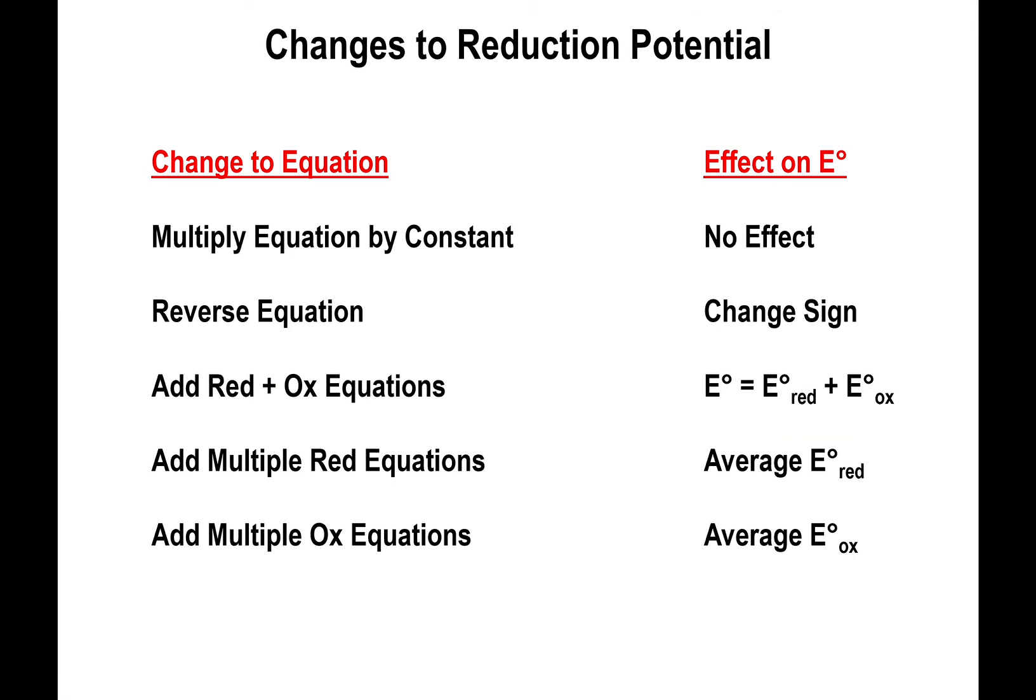And to sum up what we've done right here, if you apply the following changes to the equation, this is how you're going to change the potential itself. If you multiply the equation by constant, you do not do anything to the potential, you keep it as is. If you reverse the equation to come up with an oxidation, then you change the sign of E. If you add reductions and oxidation equations together, then you add the potential of the reduction with the potential of the oxidation to come up with a new potential for the entire reaction. If you have multiple reduction events or consecutive events, then you're going to have to average the reduction potential. And also, if you do have multiple oxidation steps to go from the original species to the final one, then you're going to have to average out the potential of the oxidation before you add them together to give you the potential of the whole cell.